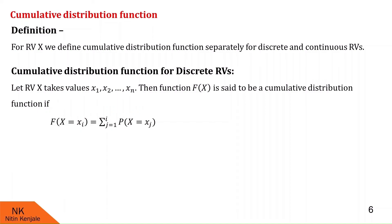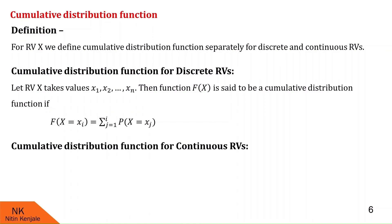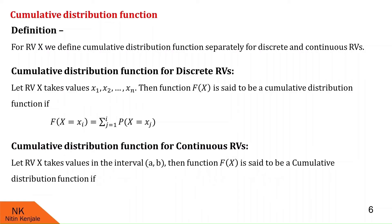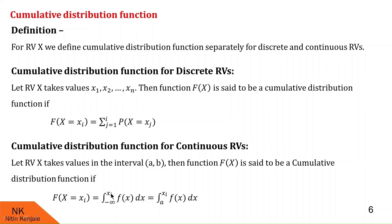On similar lines, we define the cumulative distribution function for a continuous random variable X. We assume X takes values in the interval (a, b). Then the function F(xᵢ) is the cumulative distribution function if F(xᵢ) equals the integral of f(x) dx from minus infinity to xᵢ, which is the same as the integral of f(x) dx from a to xᵢ, since the lower limit is a.